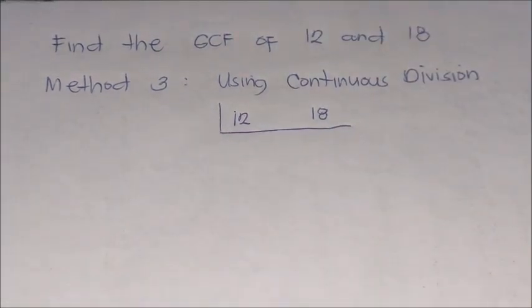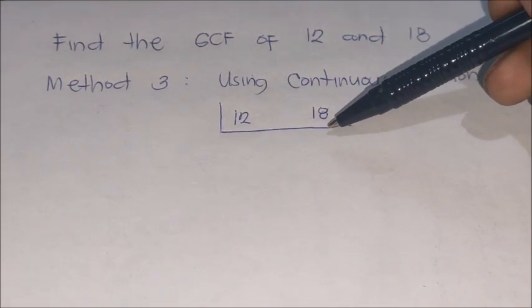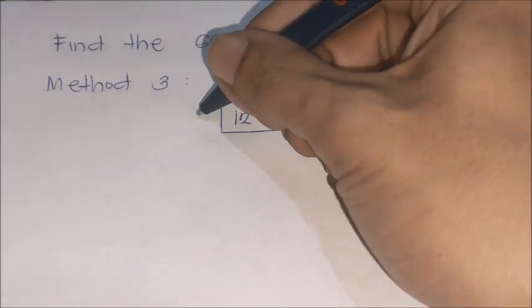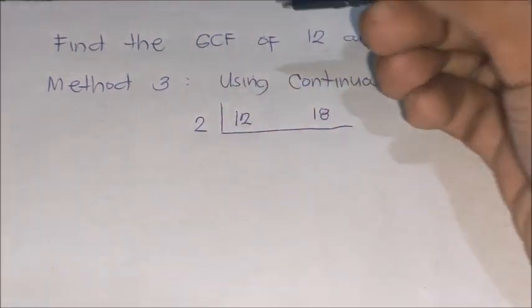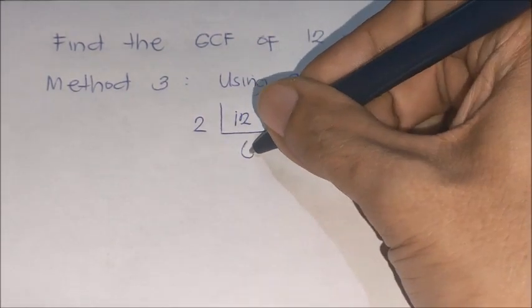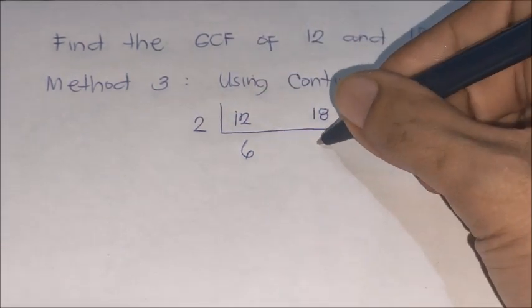Then, think of a prime number that can divide both 12 and 18. We can use 2. Then, we divide 12 by 2: 12 divided by 2 is 6. 18 divided by 2 is 9.